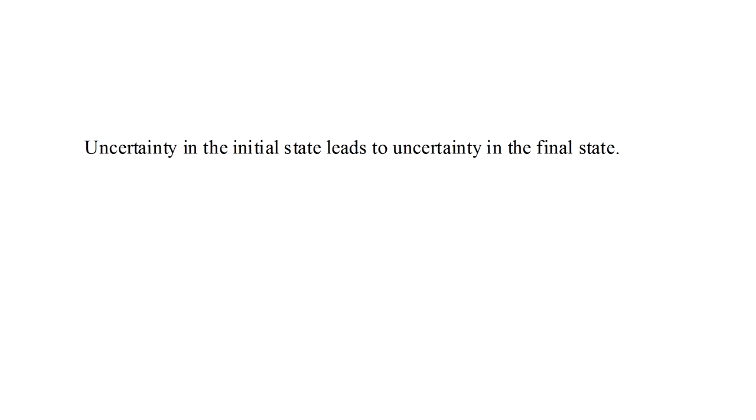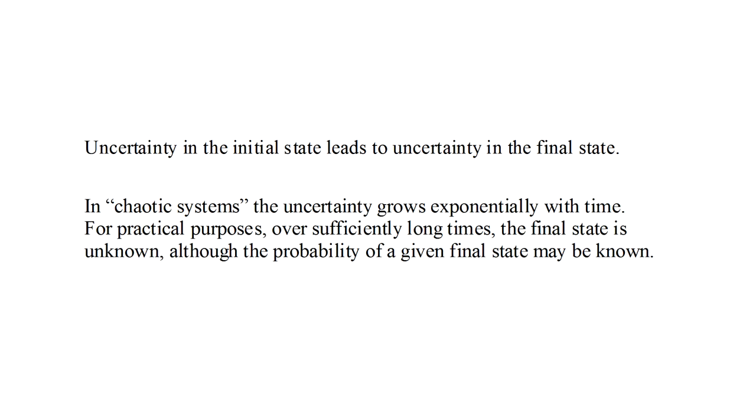Now, of course, if the initial state is uncertain, then the final state will also be. If we don't know precisely the initial position of a billiard ball, then, even though its motion is described by exact physical laws, its subsequent position on the billiard table will also be uncertain. There are even so-called chaotic systems, where the uncertainty grows exponentially with time. As a result, over sufficiently long times, the final state cannot be known if there is any uncertainty at all in the initial state. We may, however, be able to determine the probability of a given final state.